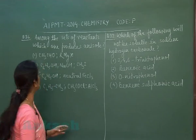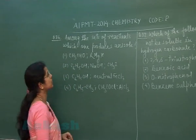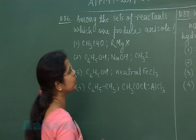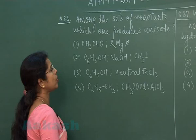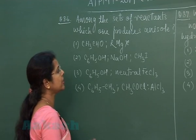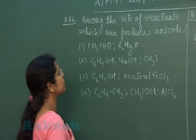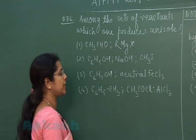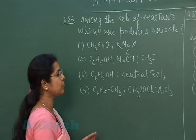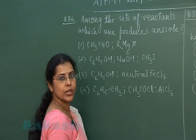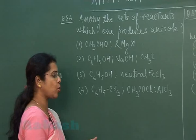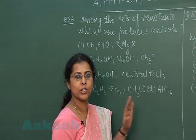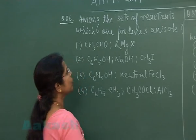Question number 86: among the sets of reactants, which one produces anisole? The first option is acetaldehyde and Grignard reagent. Second option is phenol, NaOH, and methyl iodide. Third option is phenol and neutral ferric chloride. Fourth option is toluene and acetyl chloride in presence of aluminium chloride.